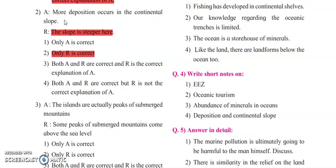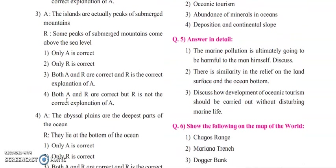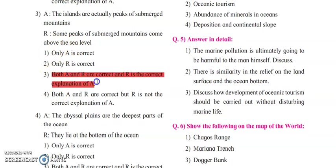Deposition always happens on flat surfaces or on obstacles. Next assertion: the islands are actually peaks of submerged mountains — this statement is true. Reasoning: some peaks of submerged mountains come above the sea level — this statement is also true. So both A and R are correct, and R is a correct explanation of A — that is the right answer.